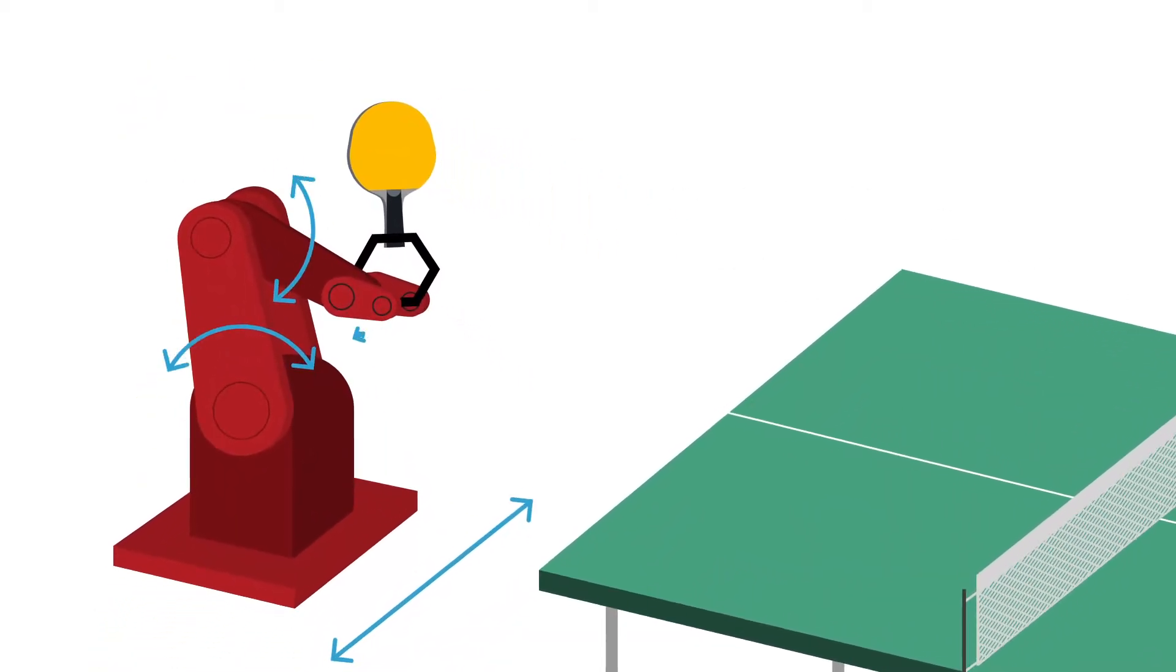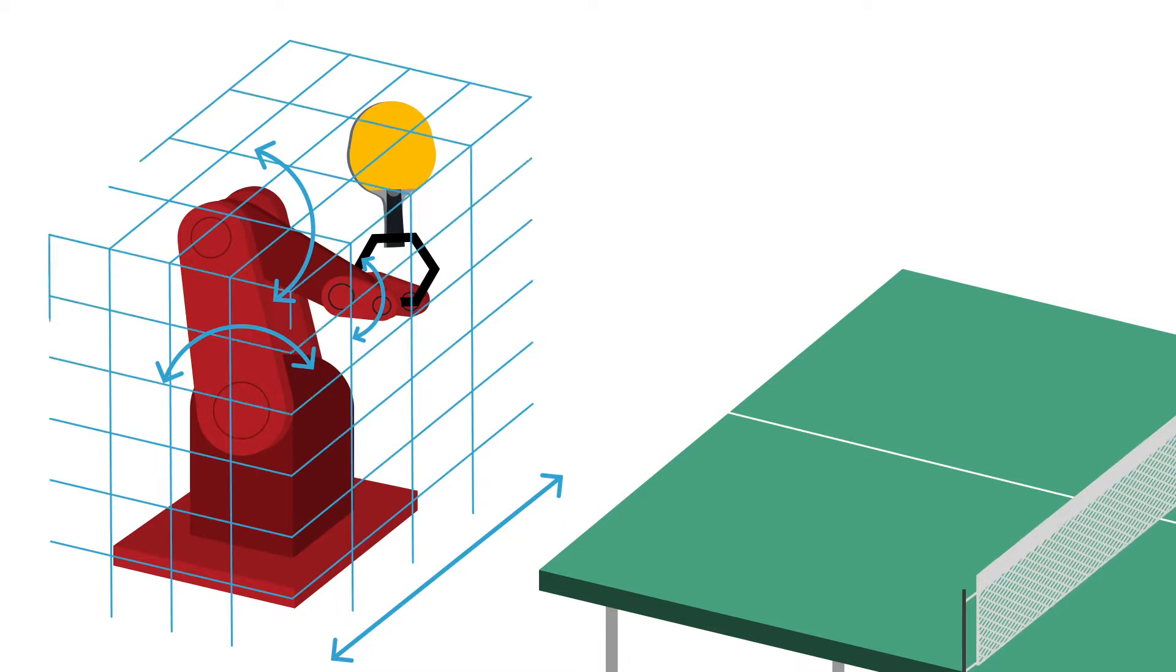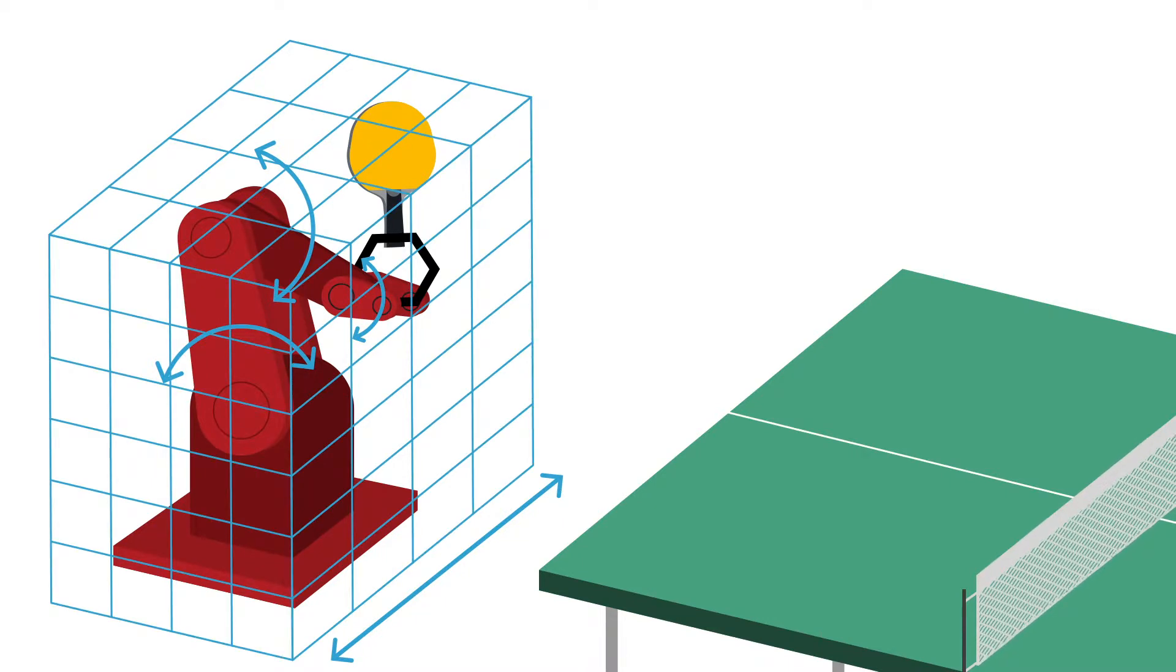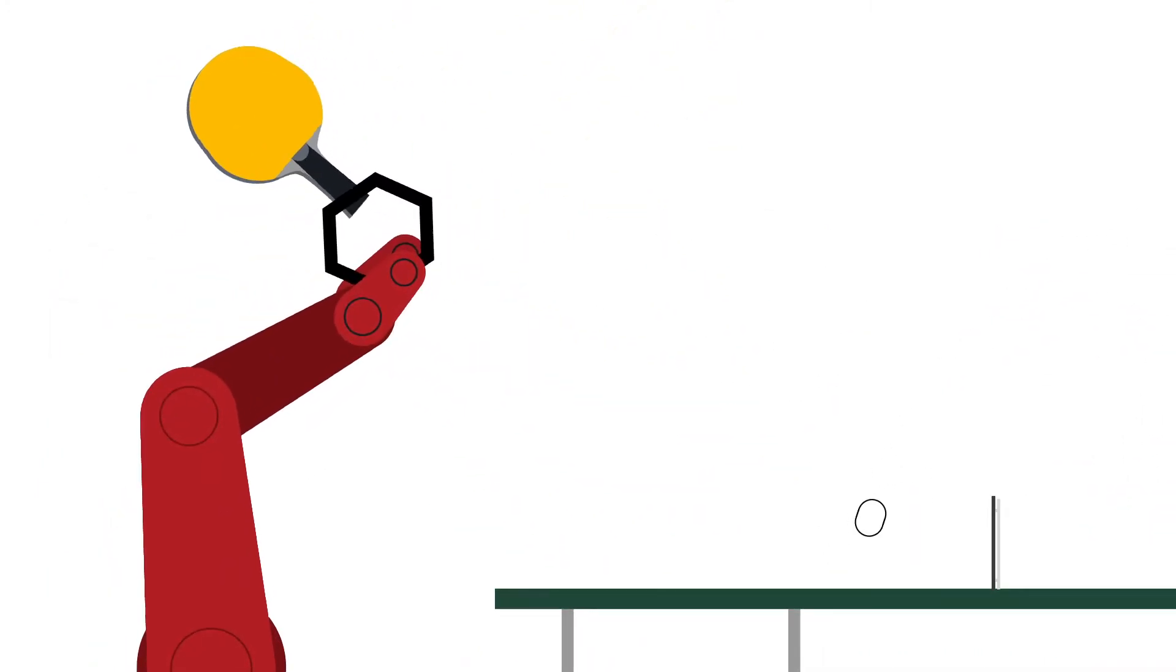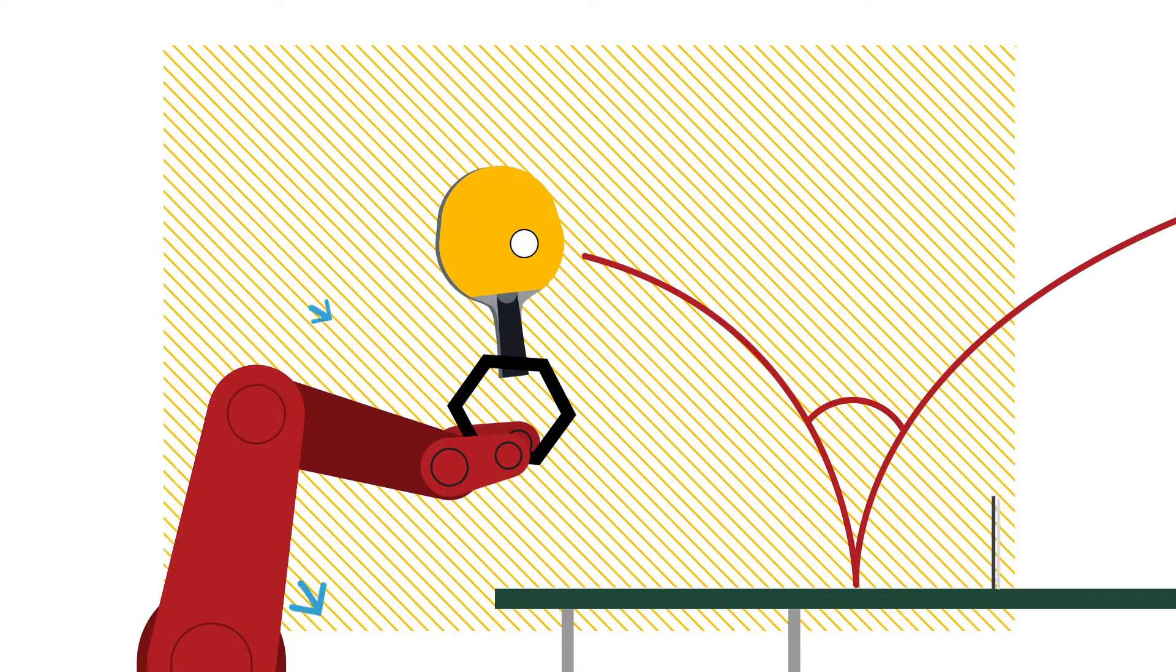Robots need to know how to configure themselves so that the destination is reached while avoiding obstacles, such as their partner and the table. If the ball followed the same path every time, a technician could encode the movement for the robot.